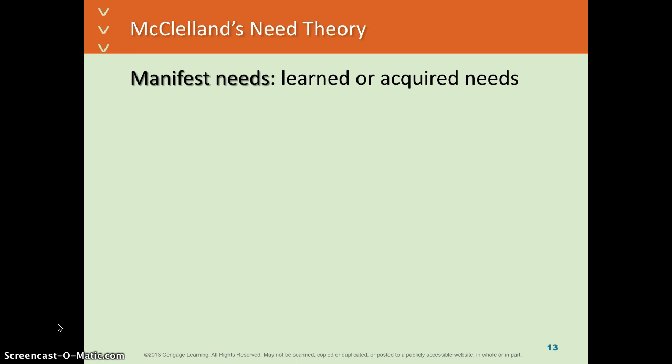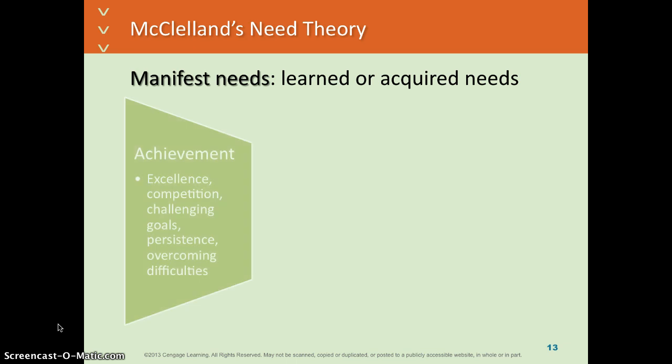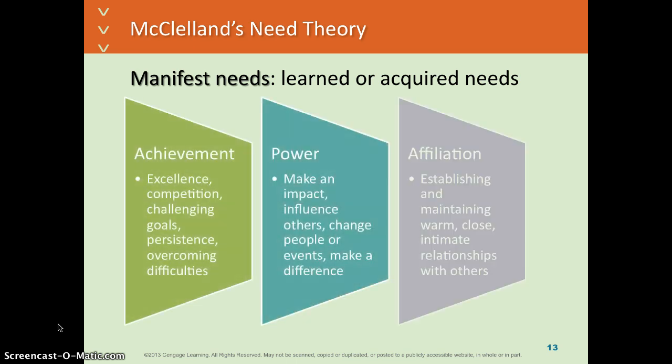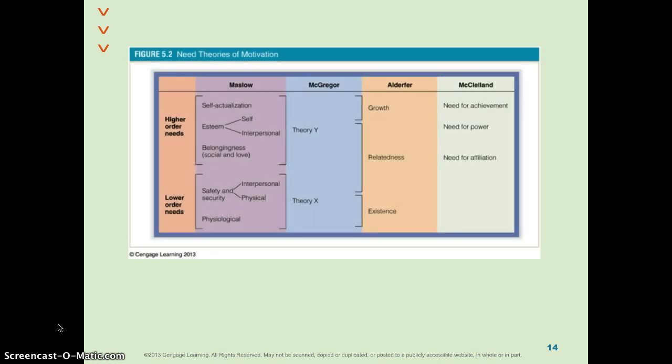McClelland's need theory means that we have motivation based on certain needs — whether it's achievement, power, or affiliation. This gives you a summary of the four different motivational need theories we looked at: Maslow's Hierarchy of Needs, McGregor's XY Theory, Alderfer's ERG Theory, and McClelland's Need Theory covering achievement, power, and affiliation.